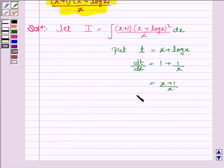So this implies dt is equal to x plus 1 upon x dx. So x plus 1 upon x into dx is dt and x plus log x is t.